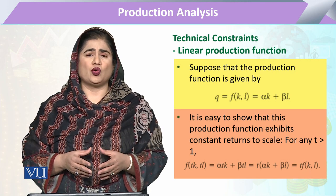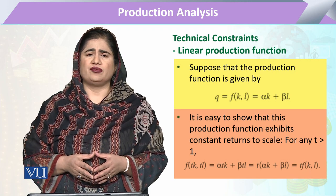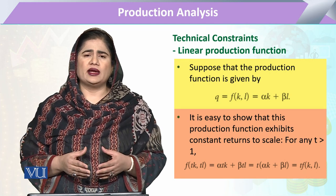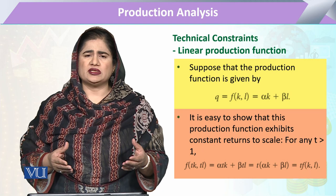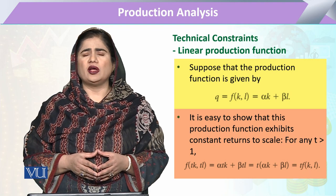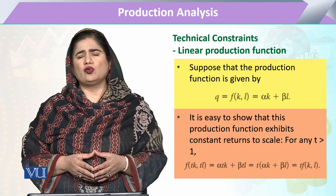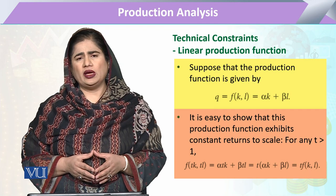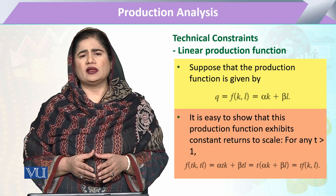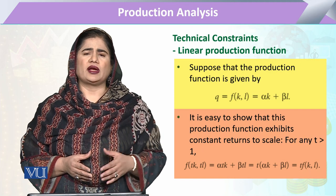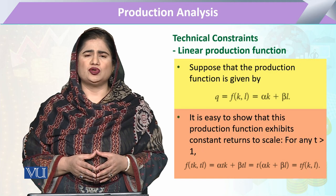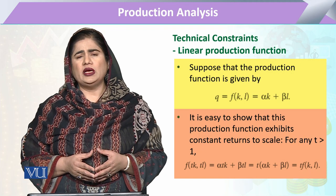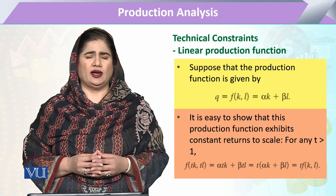When we express this type of production function, the isoquants take the form of straight lines. Whenever we switch between capital and labor, they have the same rate of technical substitution. The rate of technical substitution between capital and labor is constant throughout that straight line.